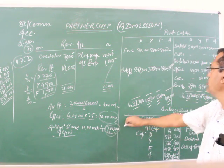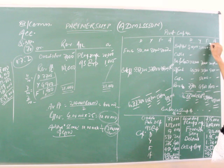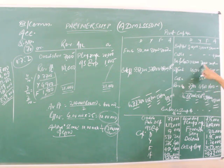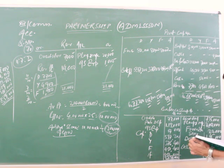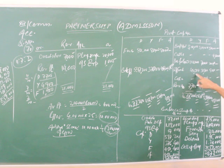It is distributed among the existing partners, old partners, or you can say sacrificing partners. Old partners, their sacrificing ratio, sacrificing partners, all existing partners. So all are getting premium for goodwill. Reserve fund has been given already in the balance sheet. Reserve fund 90,000. Old profit sharing ratio, distributed.